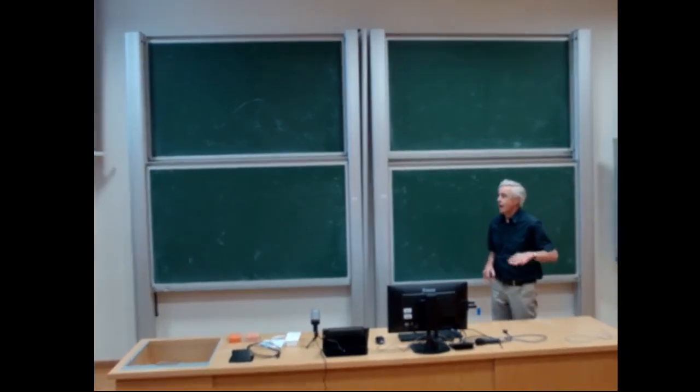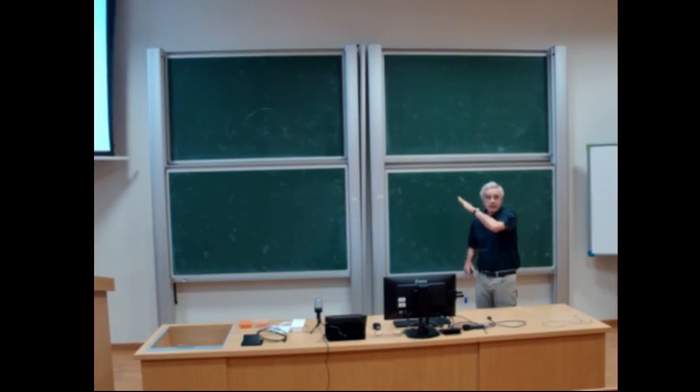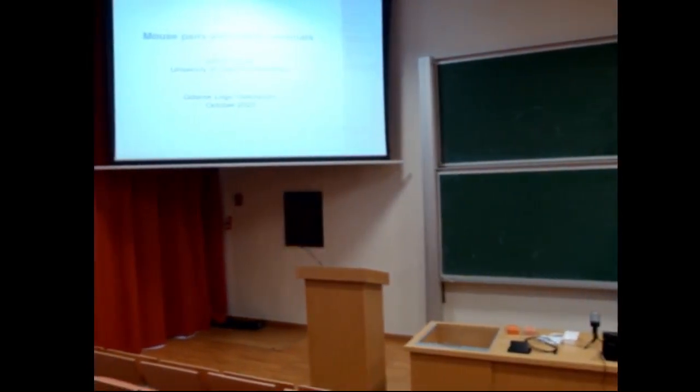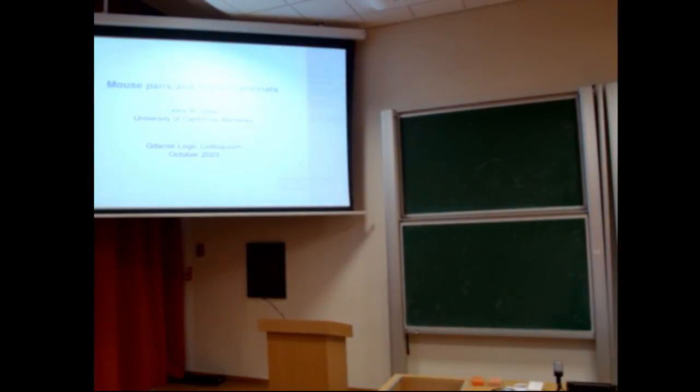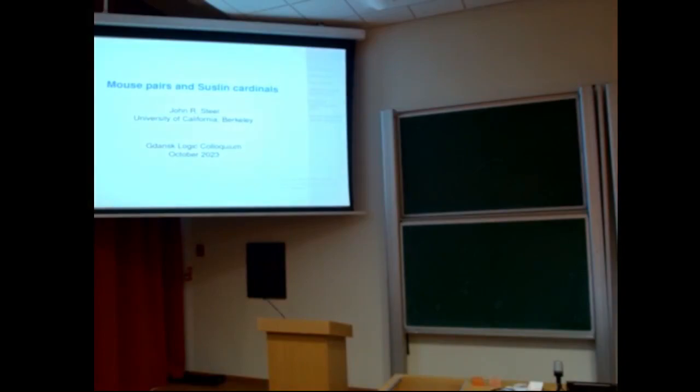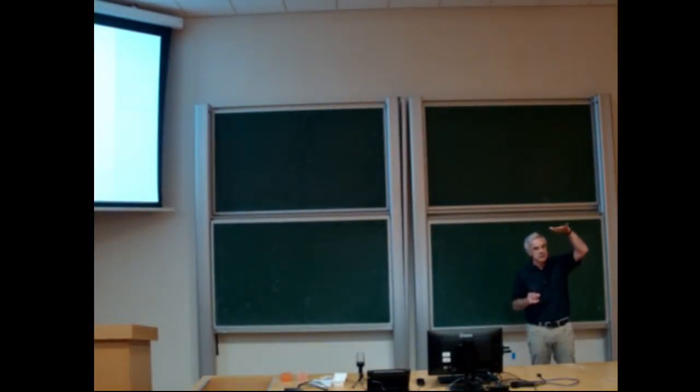I'm going to talk about some aspects of the connection between large cardinals and determinacy. The large cardinal side is the mouse pairs; the determinacy side is the Suslin cardinals. Large cardinals assert the existence of even larger infinities, extrapolating from the axiom of infinity. Determinacy is a generalization of the law of the excluded middle. Both principles come in hierarchies and are our strongest source of mathematical theories. Although at first glance they seem quite separate, these two hierarchies are very closely connected, with equivalences at different levels.